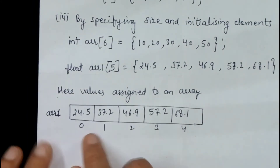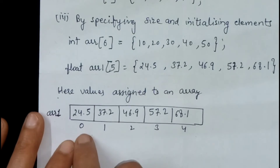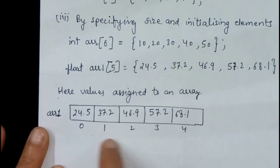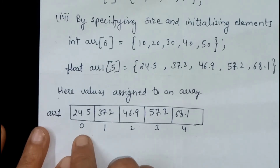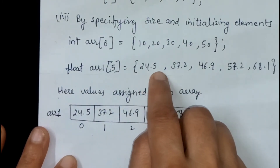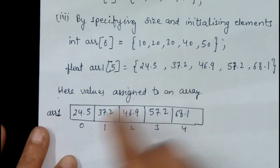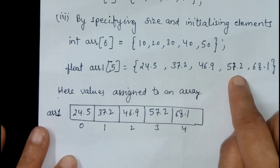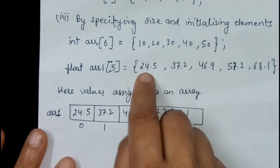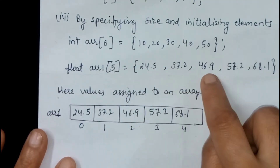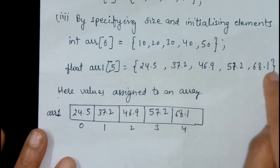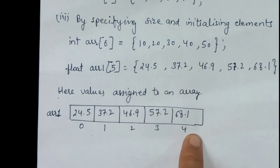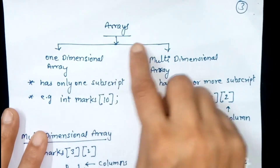Now we will see the assignment of the array. This shows the position of the elements. This is array1. The first element will take the value 24.5. This will be the first element, this the second, this the third, this the fourth, and this the fifth element — meaning they are the zeroth, first, second, third, and fourth elements. This is the assignment of the array.